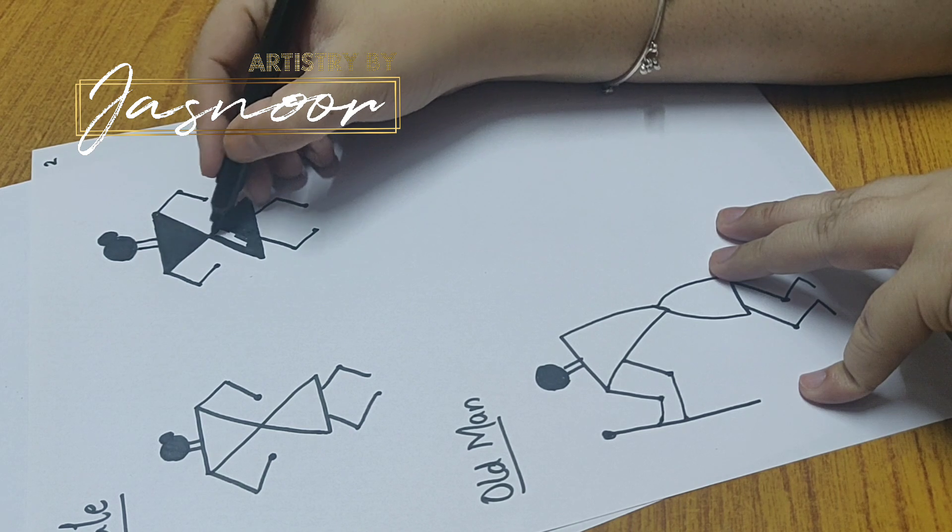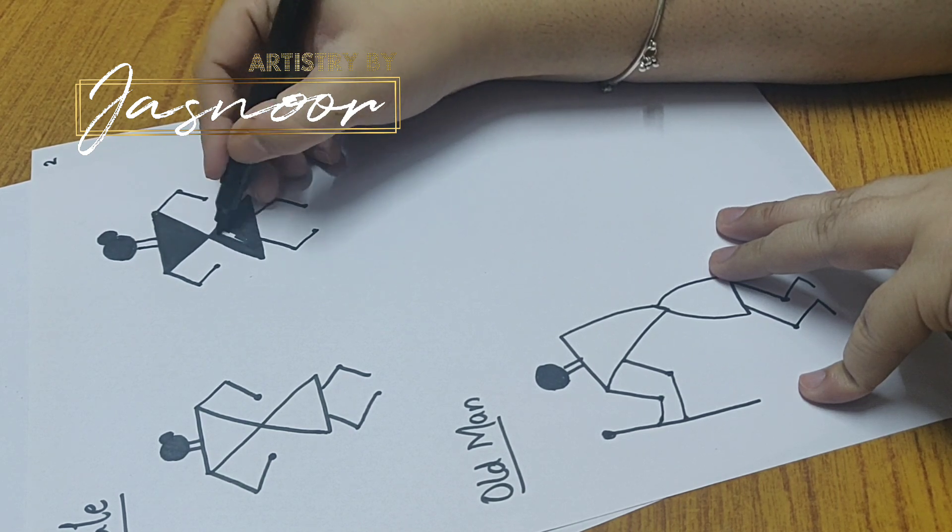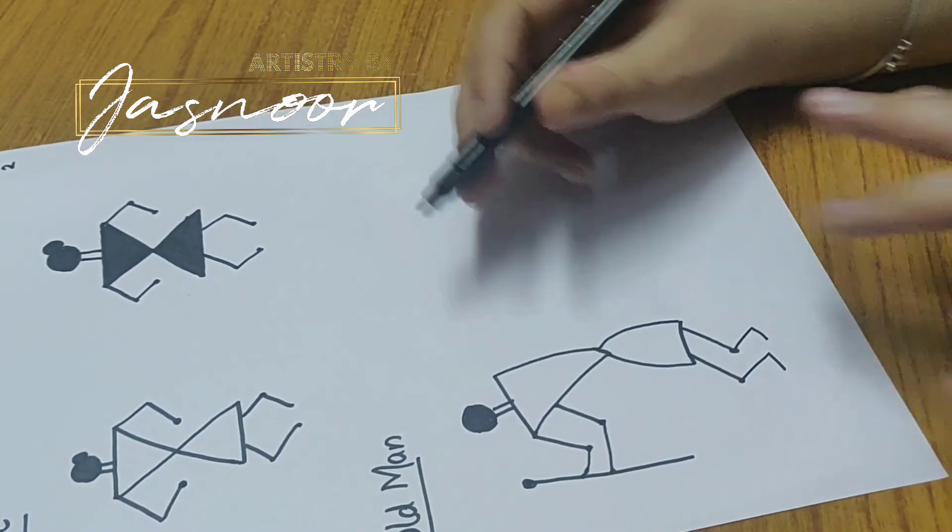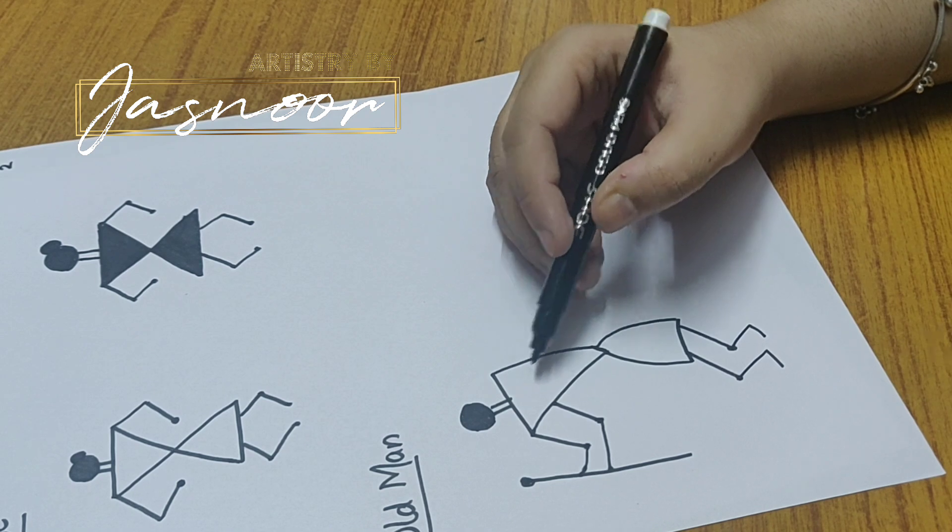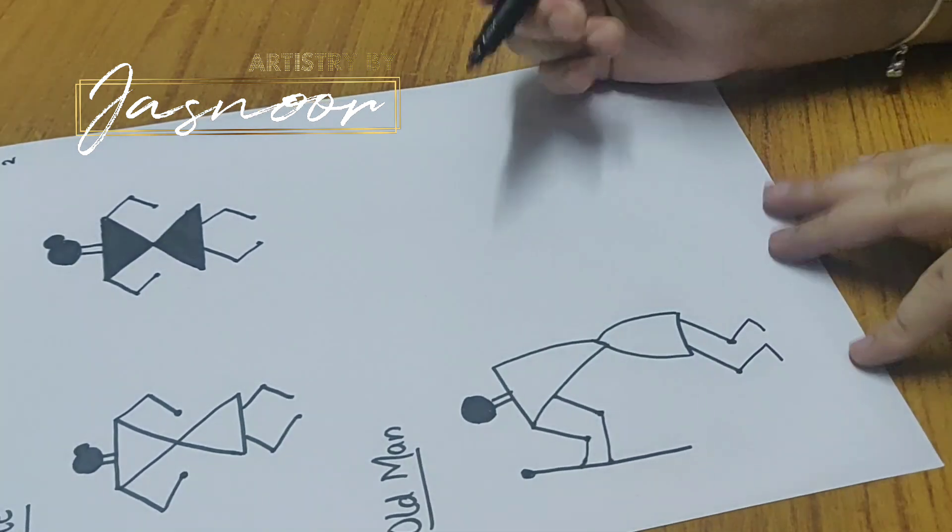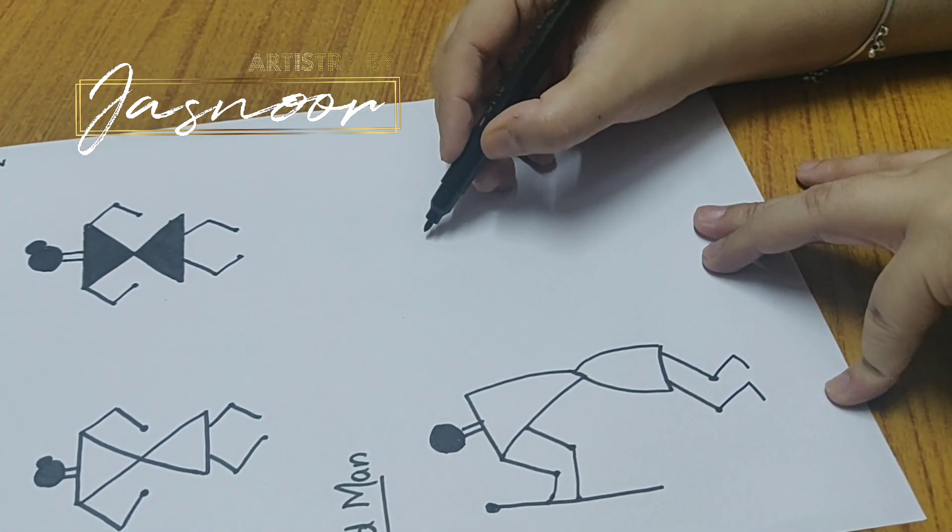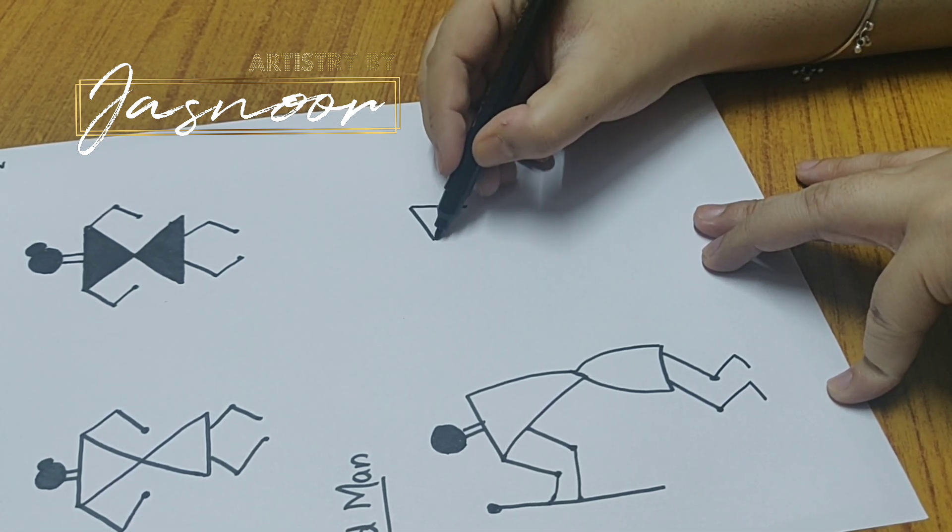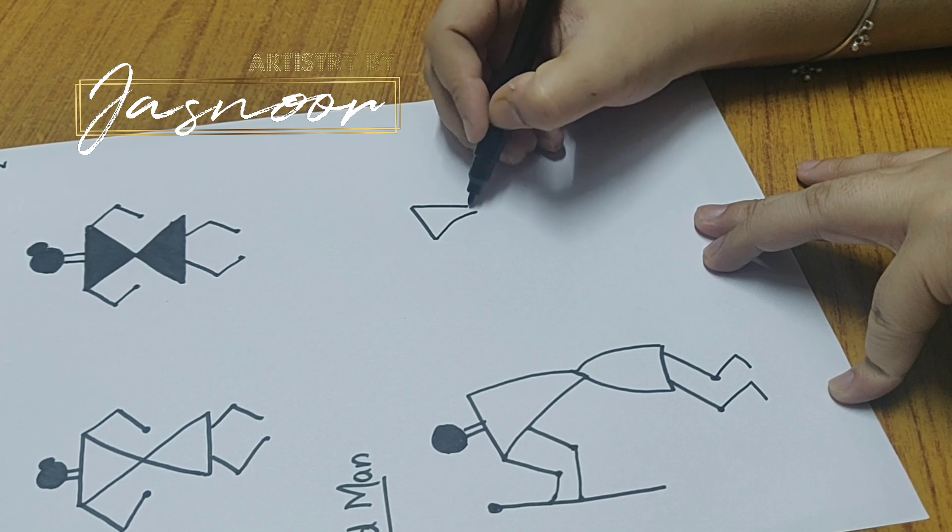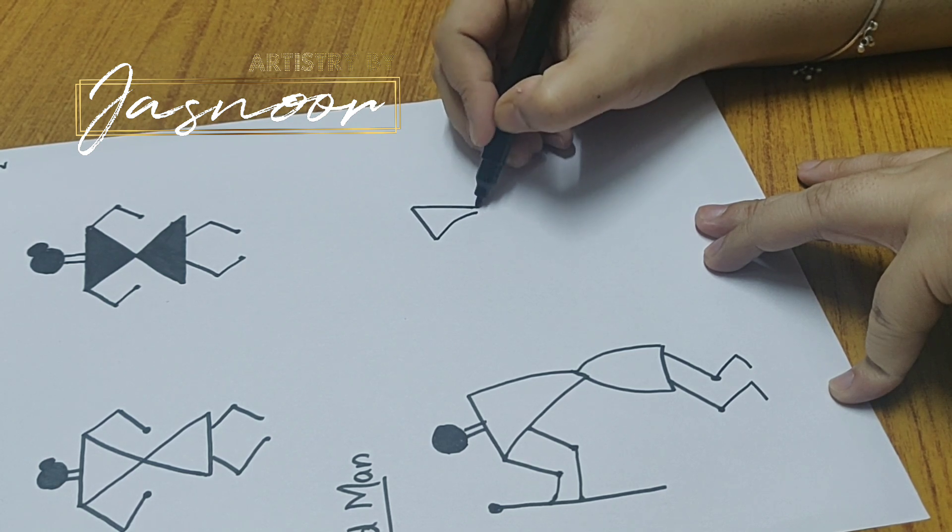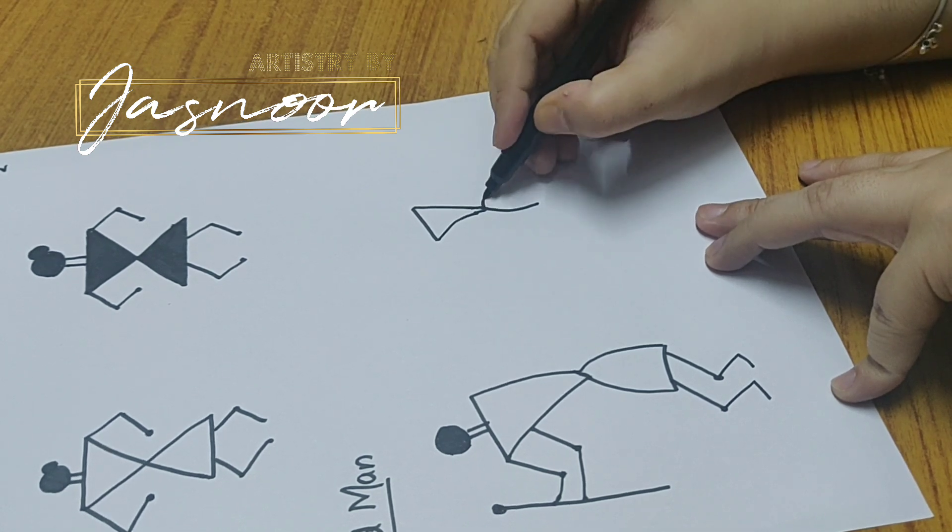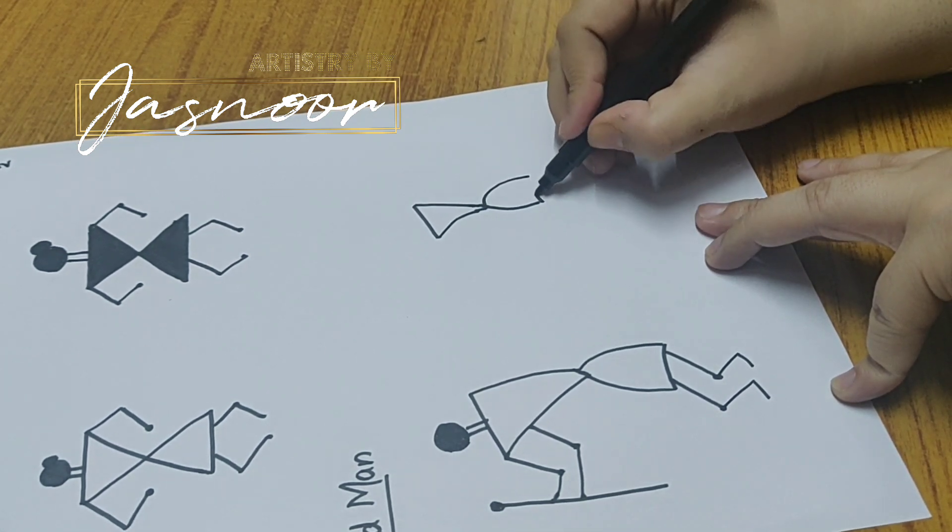And it's not important ki bilkul aise se cross karein. Thoda sa yahan pe gap thoda kam bhi ho sakta hai. So it's up to you. So I have shaded this part. Let's make an old man now. Aap old man ko depict karne ke liye, aap dekh sakte hain ki hamne isko thoda sa bend banaya hai. To isse aapko yeh depiction clear ho jata hai. I will try to make it a little small. Because I will be also shading it. And after the curve over here. Yeh neeche se straight aana chahiye.